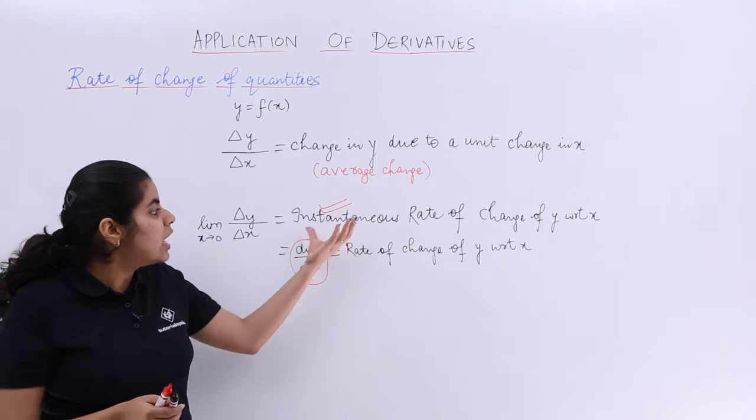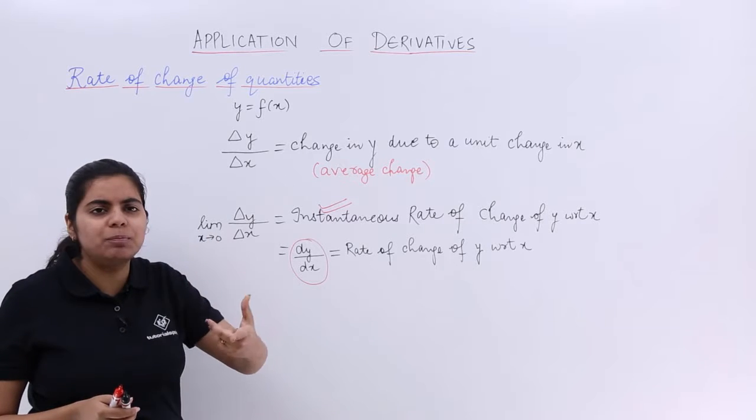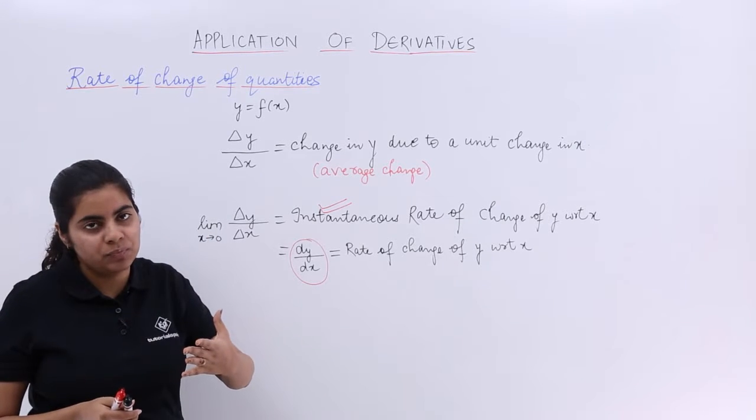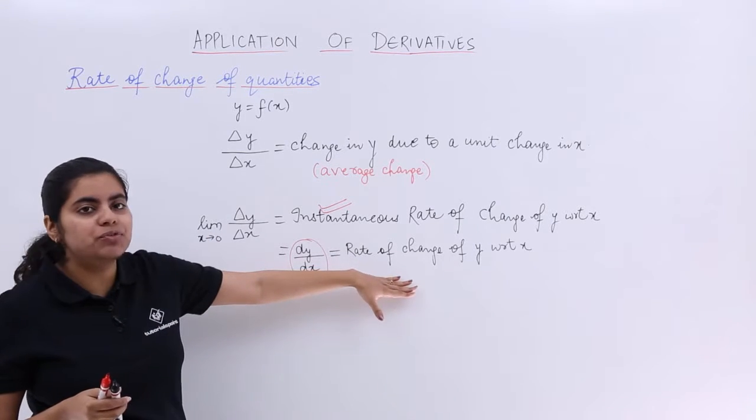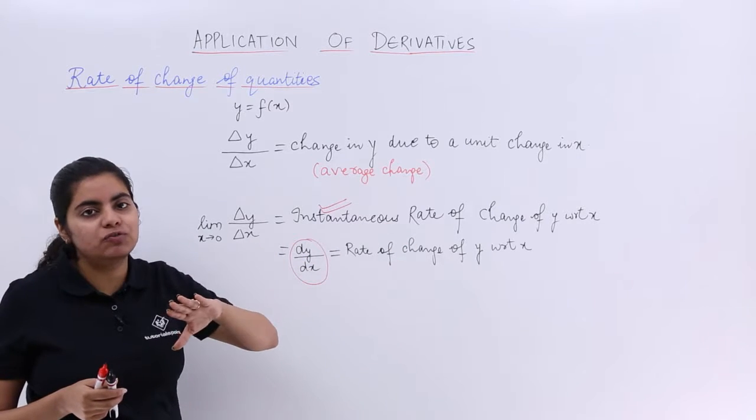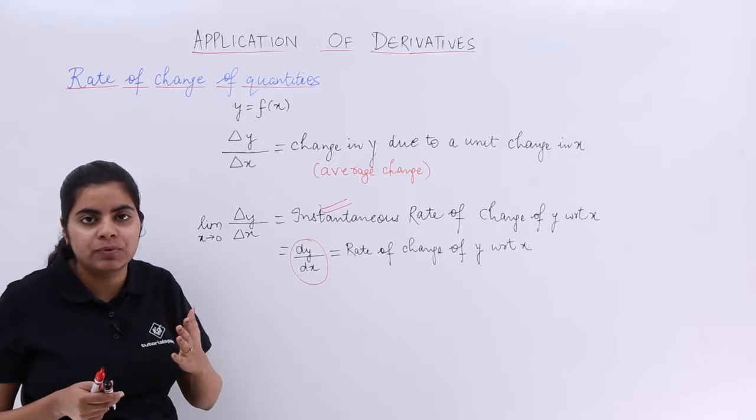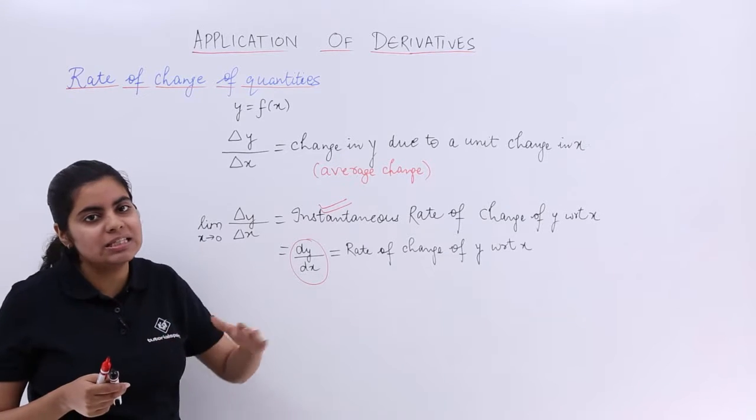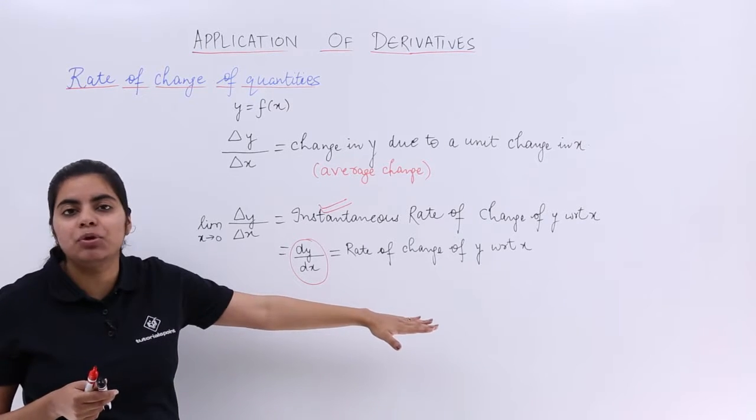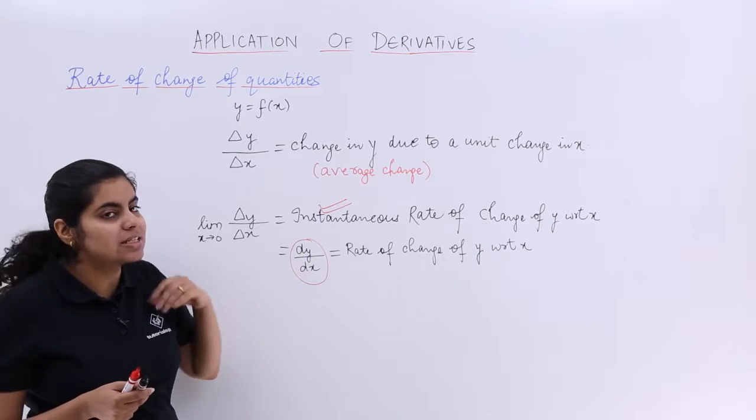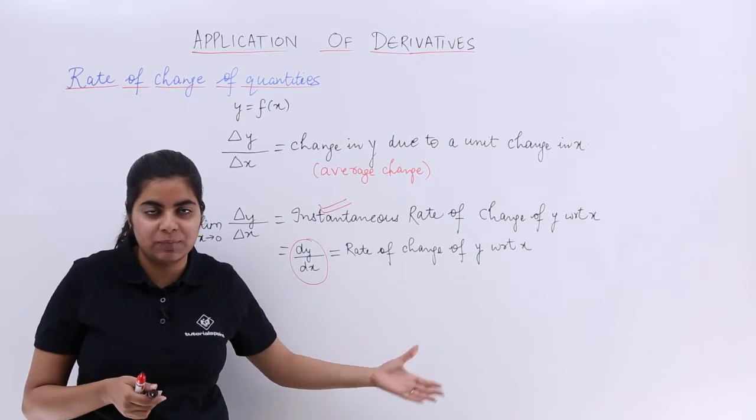Instantaneous rate of change means at that very instant, at that particular moment. So when I say rate of change or when I say instantaneous rate of change, they mean the same. That is why usually the word instantaneous is dropped. The instantaneous rate of change and the rate of change is same. That is why instantaneous is dropped because it is by default meaning that rate of change only.